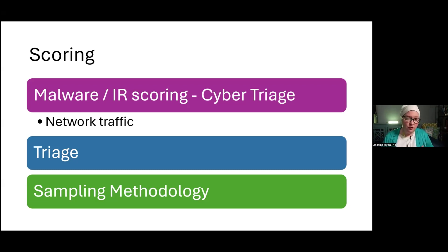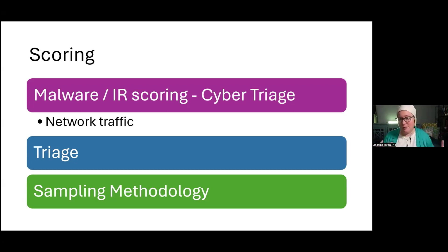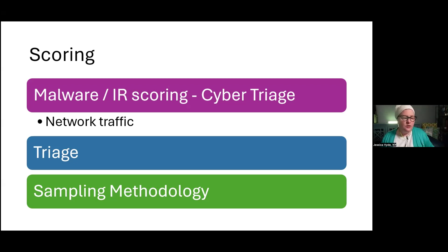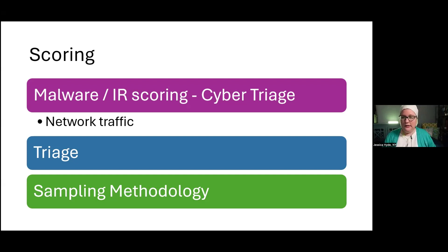Scoring can also be used in triage — determining which computers, phones, network data, or devices on a network most closely pertain to a case. When gaining devices from a scene, we could have more devices than we could feasibly ever look at. We want to prioritize those devices for analysis based on what actually pertains to our case — whether that's a malware intrusion, an exfiltration case, a child sexual abuse case, or a device used for financial fraud.